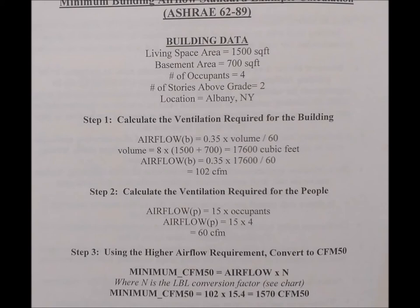Volume equals 8 times (1,500 plus 700) equals 17,600 cubic feet. Airflow equals 0.35 times 17,600 divided by 60 equals 102 CFM. Step 2: Calculate the ventilation required for the people. Airflow equals 15 times the number of occupants: 15 times 4 equals 60 CFM.